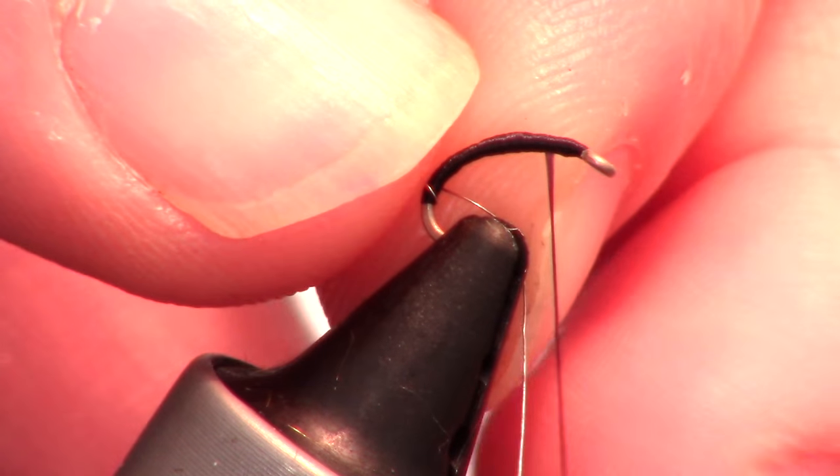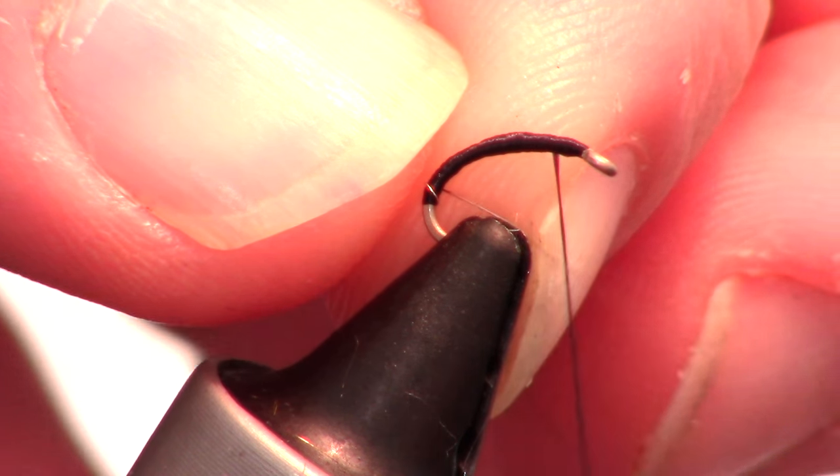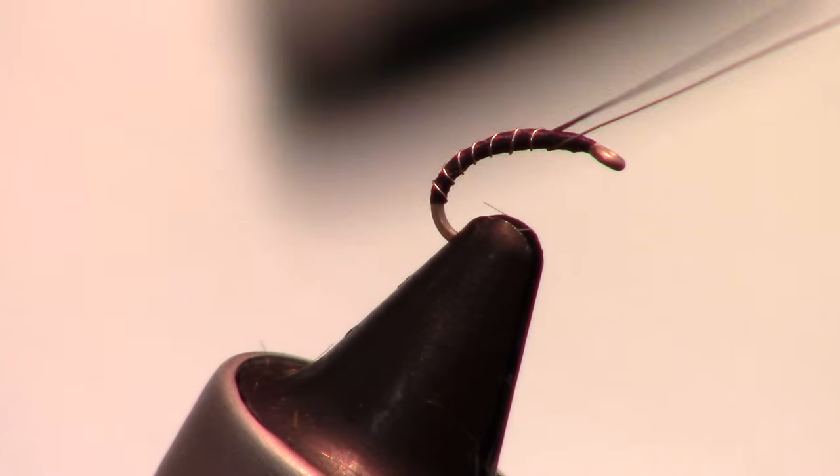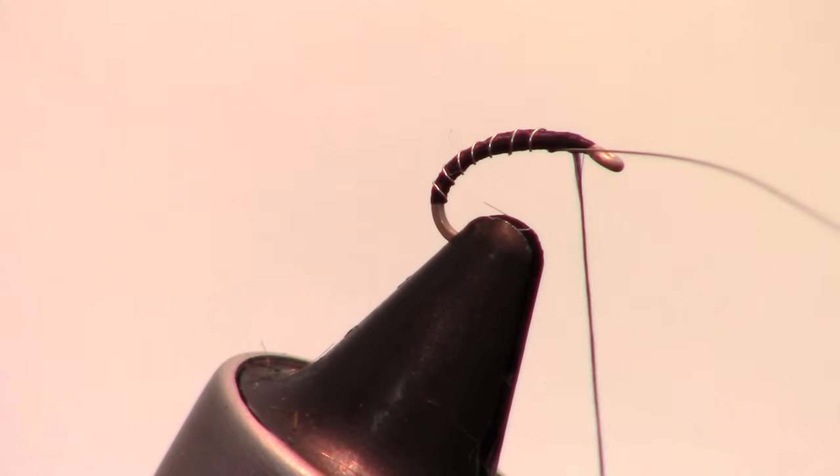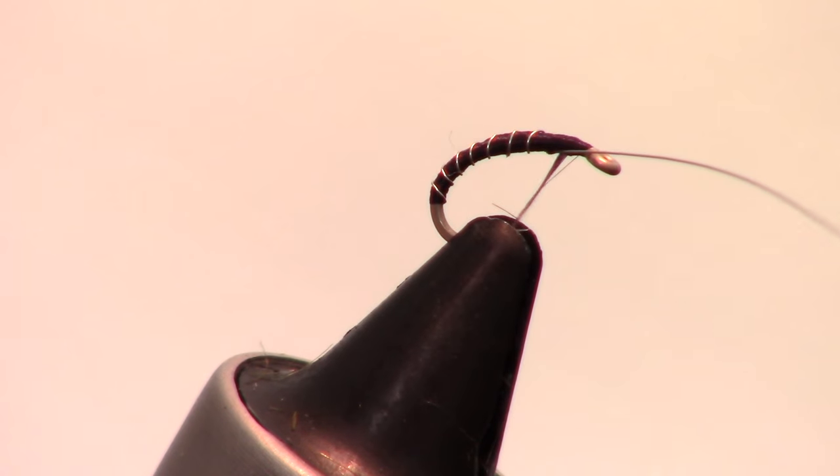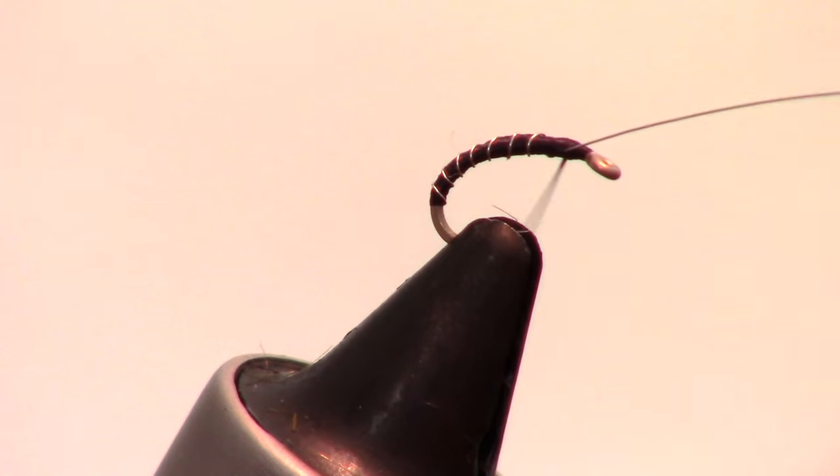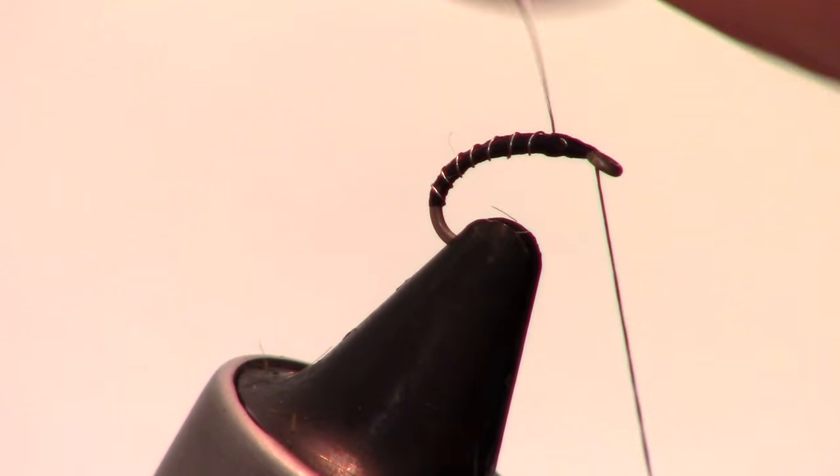Now start spiraling the wire up the hook shank evenly and capture it just behind the eye of the hook. Then you can simply helicopter the wire off.